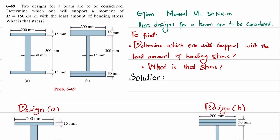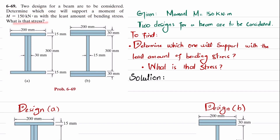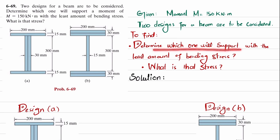Welcome back. Problem 6-69. The statement is: two designs for a beam are to be considered. Determine which one will support a moment of 150 kNm with the least amount of bending stress and what is that stress. You can see this is Design A and this is Design B. Design A has a single flange and a double web, while Design B has a double flange and a single web.